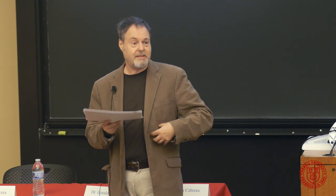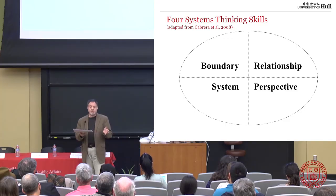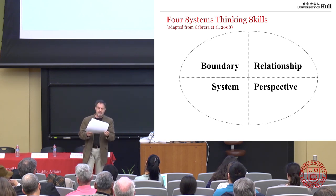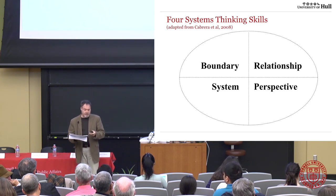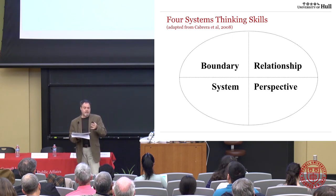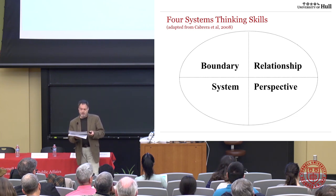Systems are often nested within each other — my liver is a system nested within my whole body as a system. And the fourth skill is thinking in terms of perspectives, different perspectives on what the system is. For example, the brain is a highly complex neurological system to a neuroscientist, but to a butcher it's just a piece of meat. From different points of view, the system will look quite different. You can look at these four skills and begin to align the different systems approaches to them.